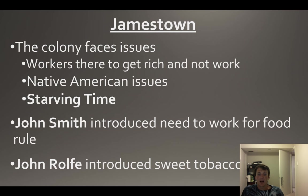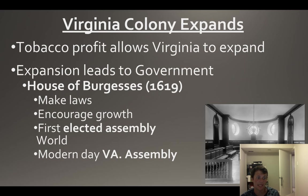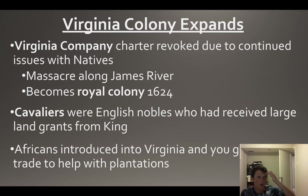John Rolfe comes in after the Starving Time and brings tobacco. This tobacco is ultimately the major cash crop that turns around the colony and it begins to expand rapidly. With expansion you need government, and you get the House of Burgesses - hint hint, wink wink - the House of Burgesses is the first elected assembly in the New World.